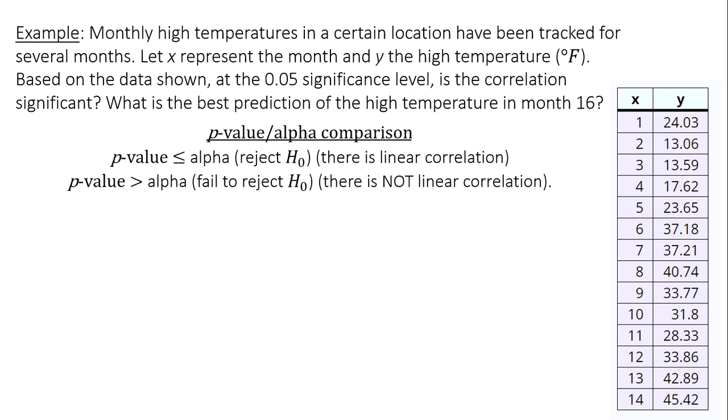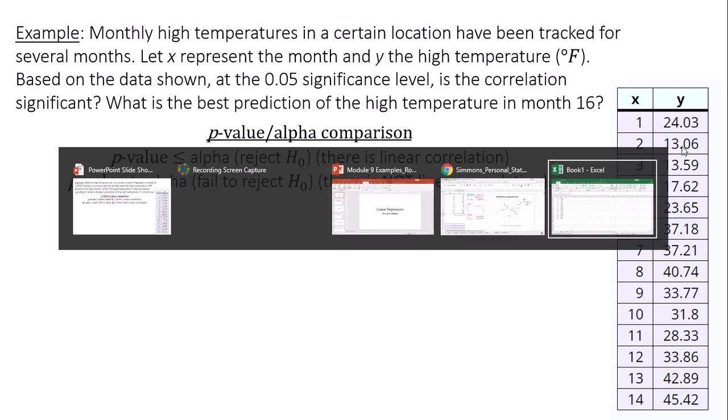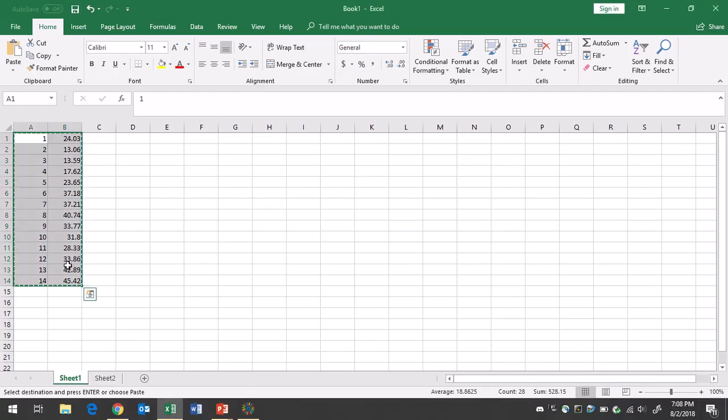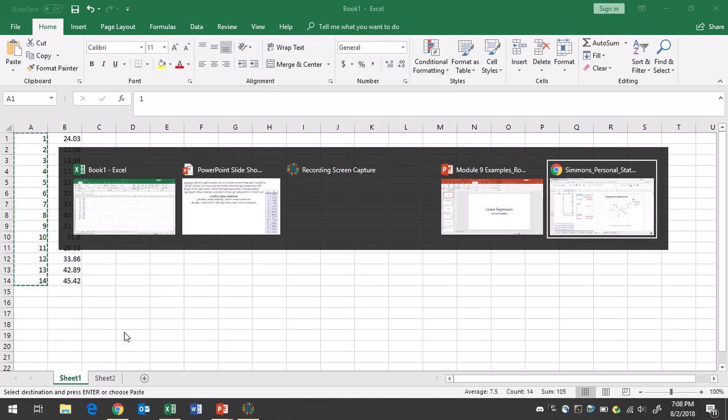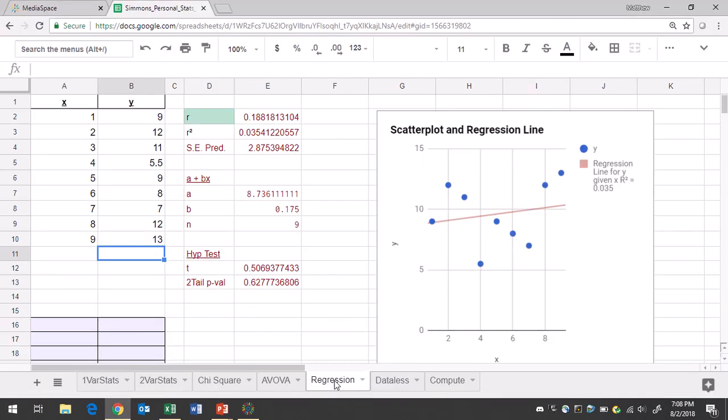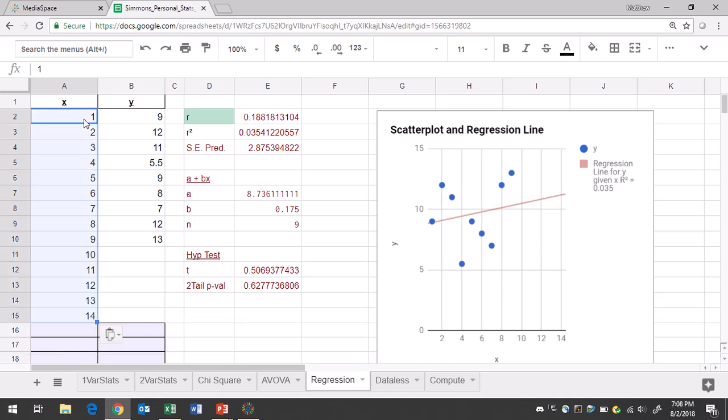So let's go ahead and put this data in Google Sheets. I went ahead and took the data from the example and put it into an Excel spreadsheet. Then I'm going to copy over the data column by column. I'm going to go to the Google Sheets spreadsheet to the regression tab, paste the data into cell A2.